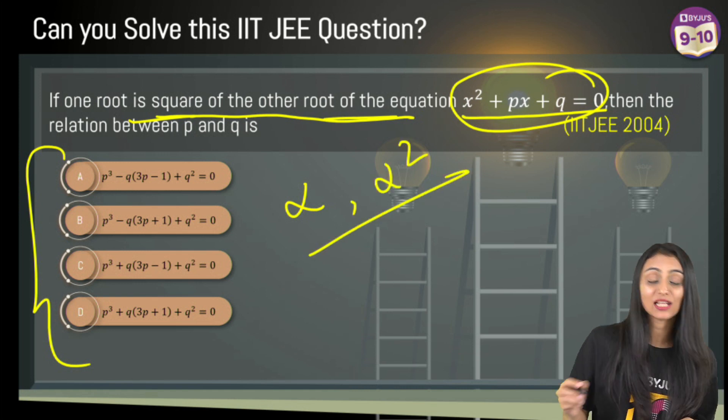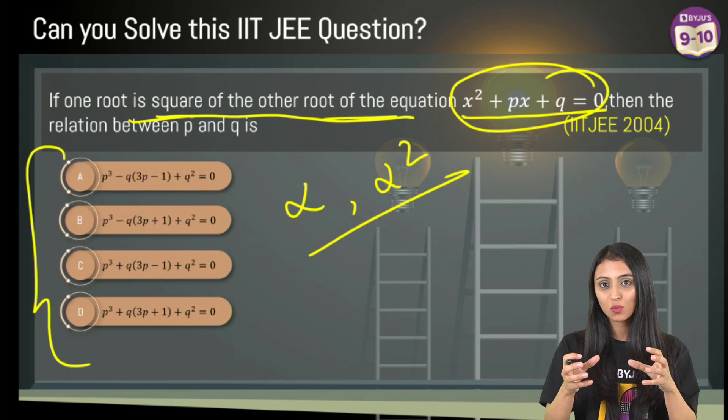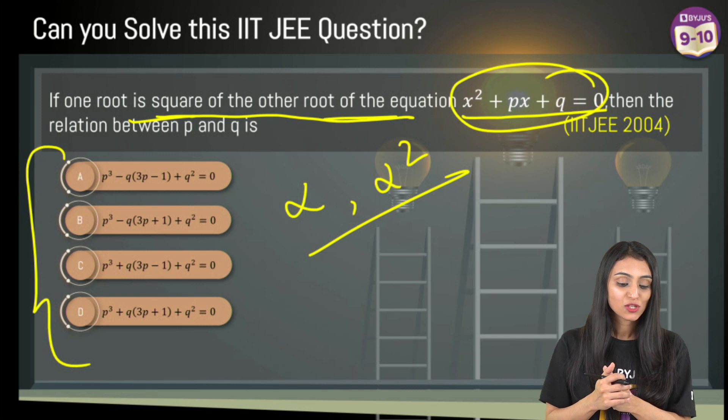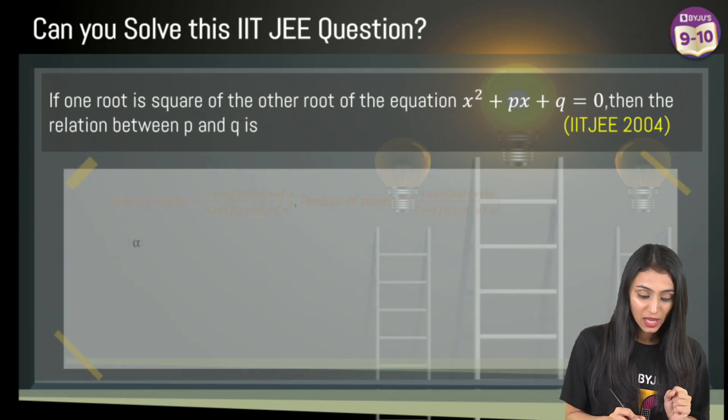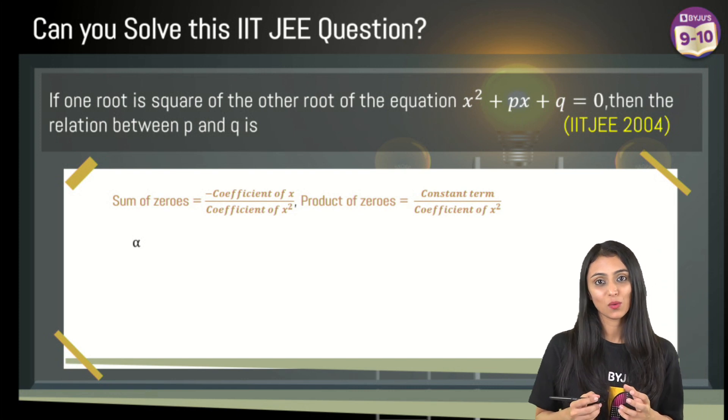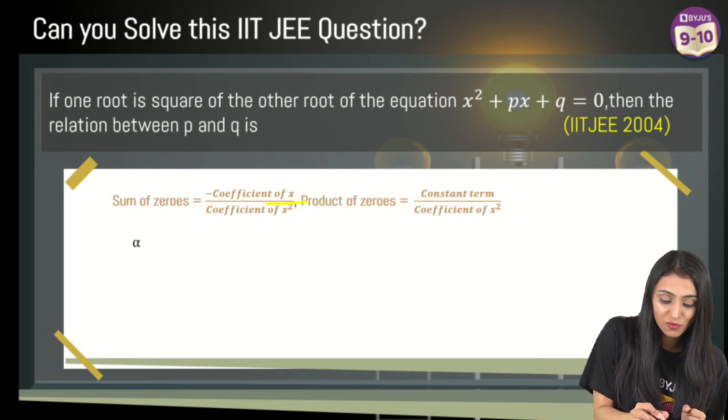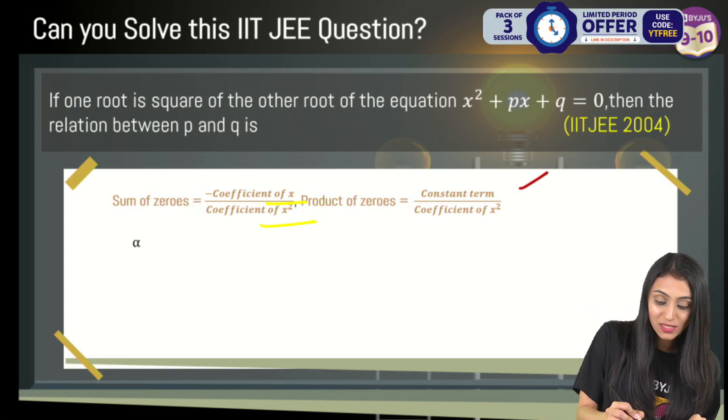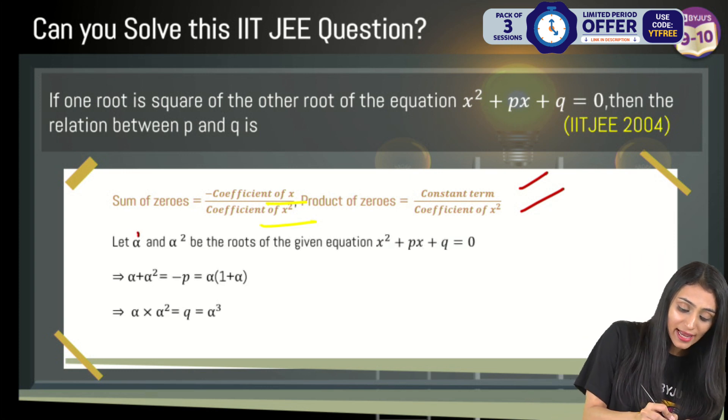We've learned the relationship between the zeros and the coefficients of the polynomial. First, sum of zeros equals -b/a, which is minus coefficient of x upon coefficient of x². Product of zeros equals the constant term upon coefficient of x².